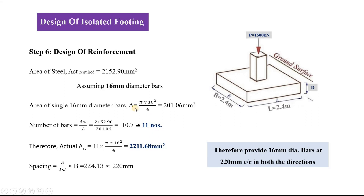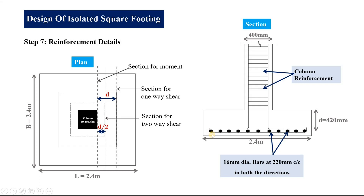The spacing of the 16 mm diameter bars is calculated as: spacing = (area of single bar / actual area provided) × B = (201.06 / 2211.68) × 2400 ≈ 220 mm. Therefore, we provide 16 mm diameter bars at 220 mm center-to-center in both directions — along the length and width of the footing.